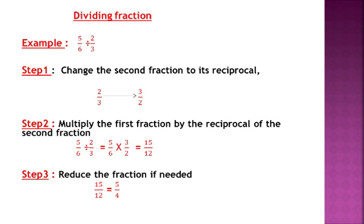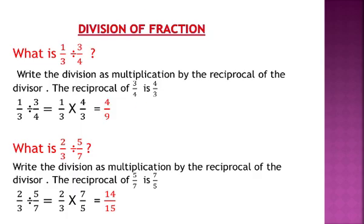Step 3 is to reduce the fraction if needed. We want to reduce 15 over 12 to its simplest form. We know 3 is a common factor of 15 and 12, so we divide both by 3. We get the simplest form 5 over 4. So the answer to 5 over 6 divided by 2 over 3 is 5 over 4.